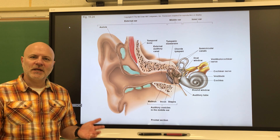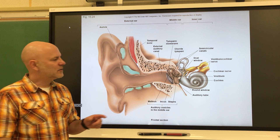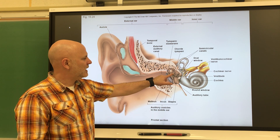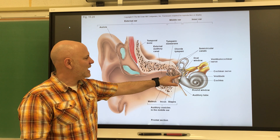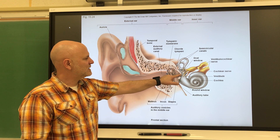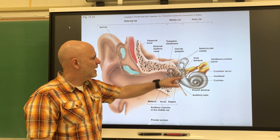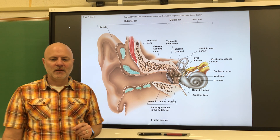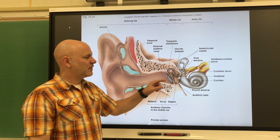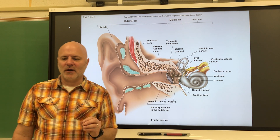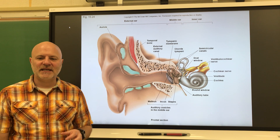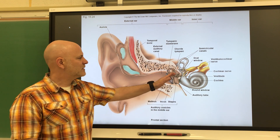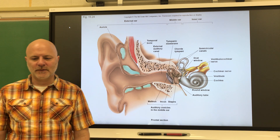The auditory ossicles bridge the eardrum to the inner ear. We have the malleus, which is attached to the eardrum; the incus, which is the middle one; and the stapes, which is attached to the inner ear at what is known as the oval window. Vibrations from the eardrum vibrate the malleus, which vibrates the incus, which vibrates the stapes, which vibrates fluid in the inner ear.